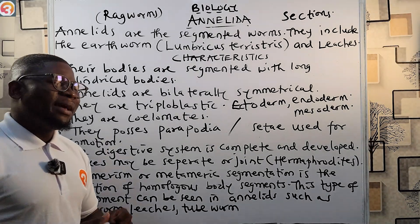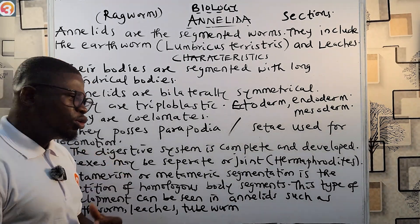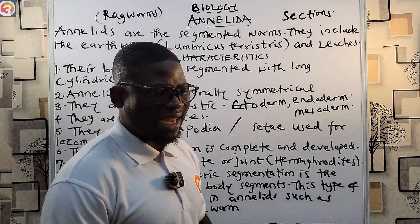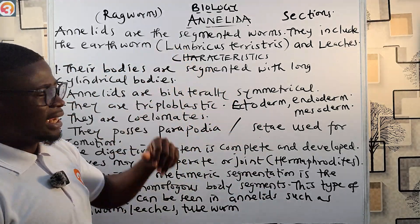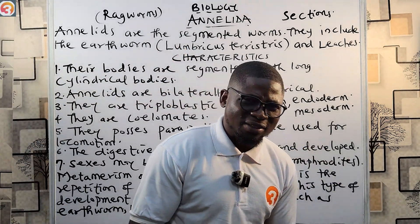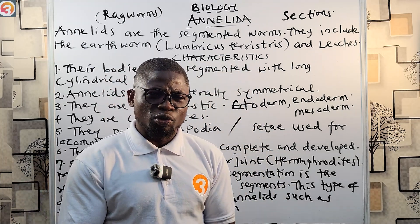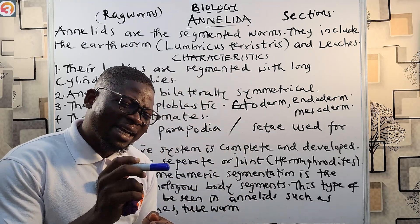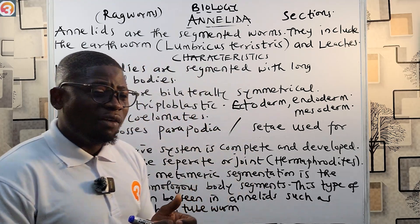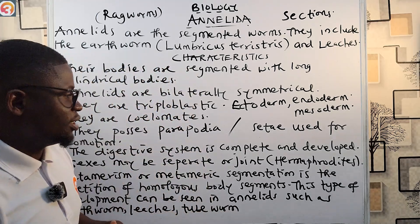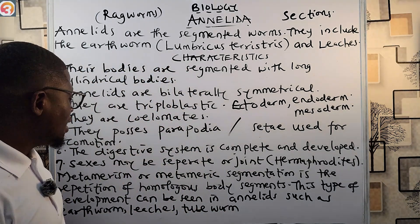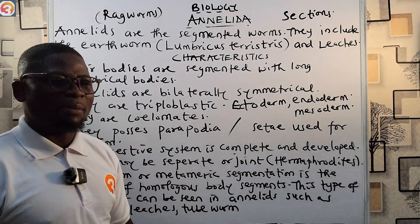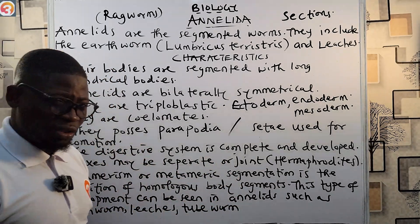Metamerism or metameric segmentation is the repetition of homologous body segments. As explained, their bodies are divided into sections called segments, and in each segment there is a repetition of internal organs. This type of development can be seen in annelids — this has come up in past exam questions.